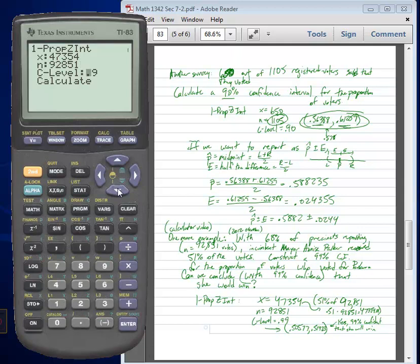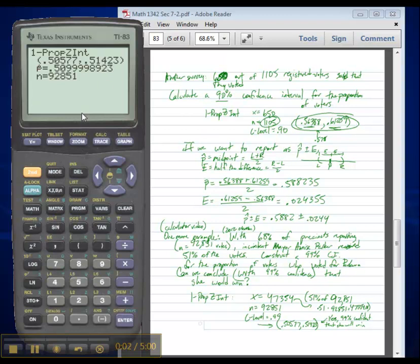And then our confidence level, we wanted a 99% confidence level. You could put 0.99. I'm just going to show you that it'll understand if you put in 99 there. And then hit enter on calculate. And the calculator constructs that confidence interval for us. You see the p-hat here is 0.5099. That's that 51% of voters who had voted for Mayor Parker at the time with 68% of precincts reporting.